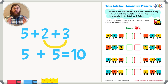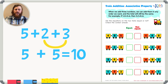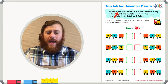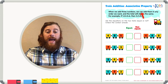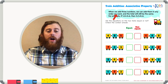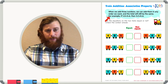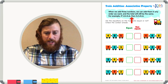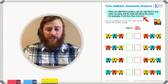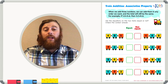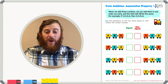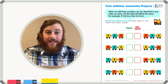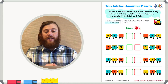Let's take a look at the worksheet: train addition, the associative property. Read the directions and the information up top and get started right away. When we add 3 numbers, we can add them in any order we want, and the total will still be the same. For example, if 1 plus 2 plus 3 equals 6, then 3 plus 1 plus 2 also equals 6. Let's read the directions: are the equations on the two trains equal or not? Check the correct answer.